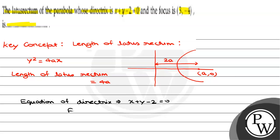And the focus coordinates are given as (3, -4). As I just told you, the distance from directrix to focus is equal to 2a. It means 2a is the perpendicular distance.